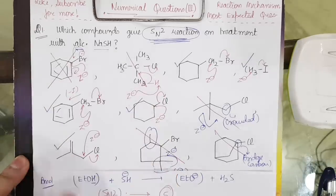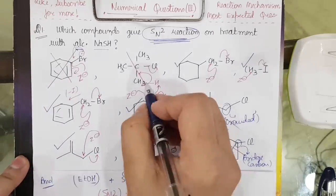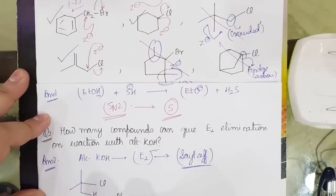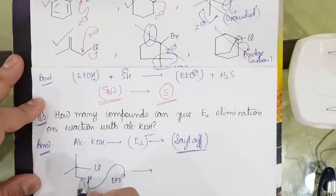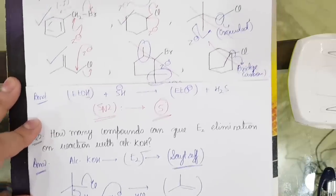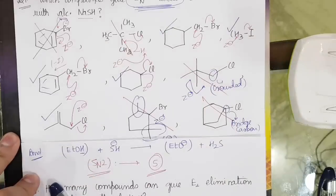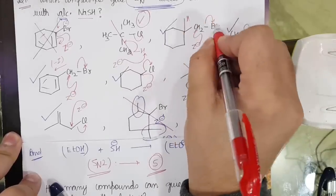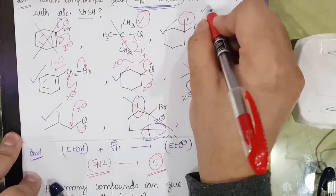In case one, elimination cannot be done because bromine cannot be removed. In case two, elimination can be done: EtO minus attacks the hydrogen, the bond moves and takes out Cl — double bond forms, so elimination occurs in case two. In case three, elimination can also be done — attack on H, then Br is removed, double bond forms.